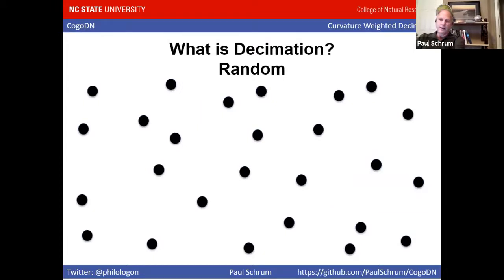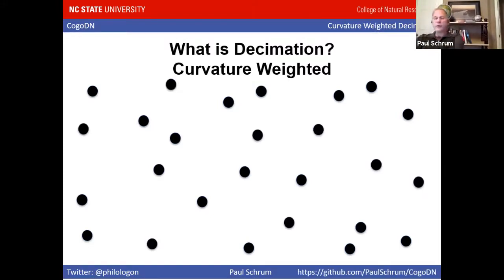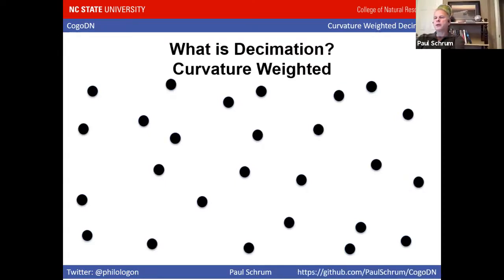What is decimation? Decimation is where you pick points to toss out. With random decimation, you use a computer's random number generator — some points it says keep, some it says throw out. You have no way to know which points are going to be kept and which are going to be thrown out. What if you threw out an important point? That raises the question of how do you know which points are more important and which are less important or even redundant.